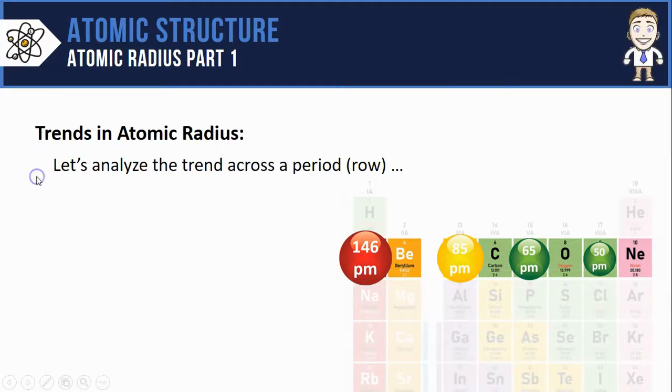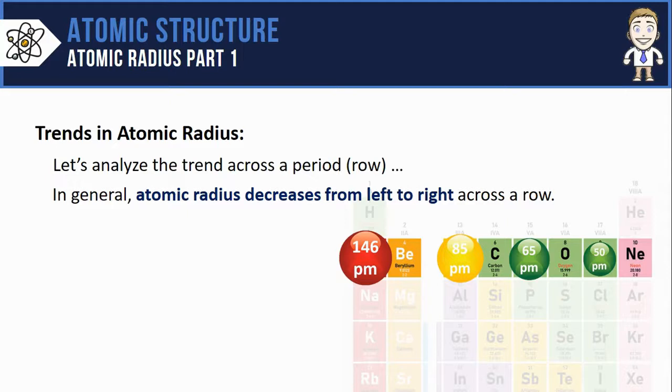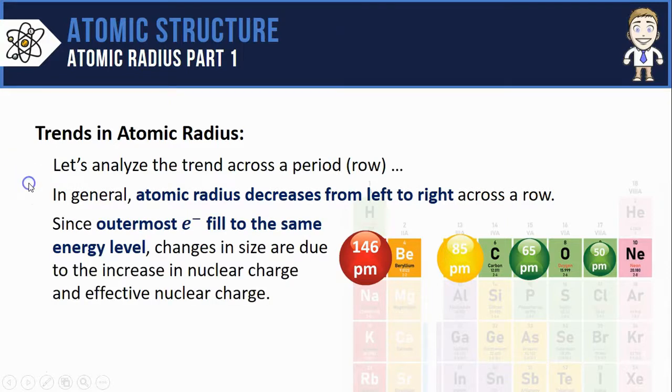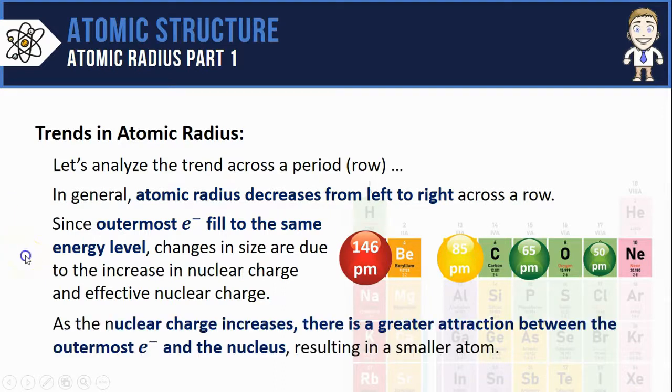Let's try to summarize these ideas and put it into some words that you can jot down if you think you need. In general you'll see that atomic radius will decrease from left to right across a row. Since the outermost electrons fill to the same energy level, these size changes are due to the increase in nuclear charge and effective nuclear charge.